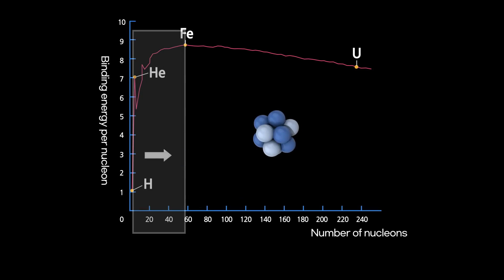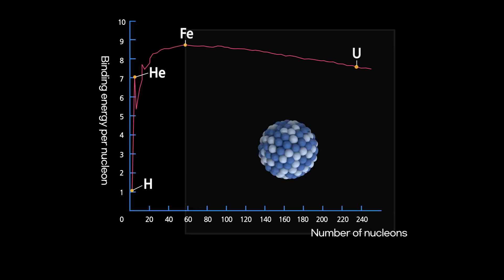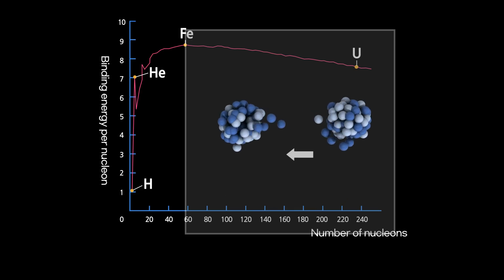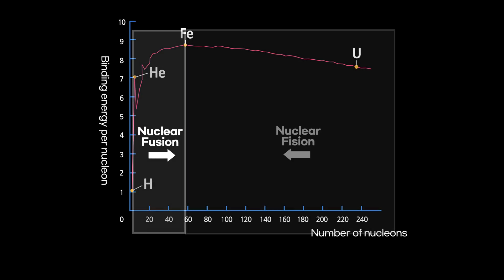Elements with fewer nucleons than iron want to be stable through fusion. Elements with more nucleons than iron tend to go through fission to become stable. These processes are nuclear fusion and fission.